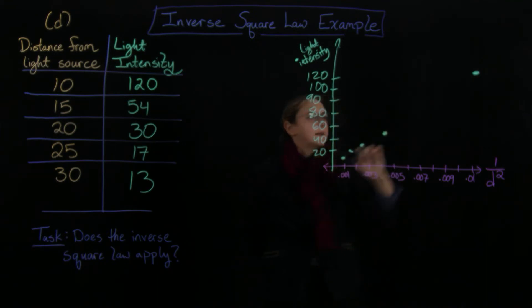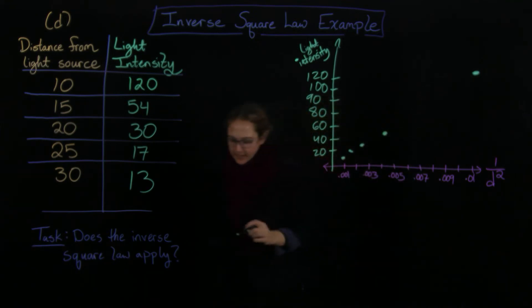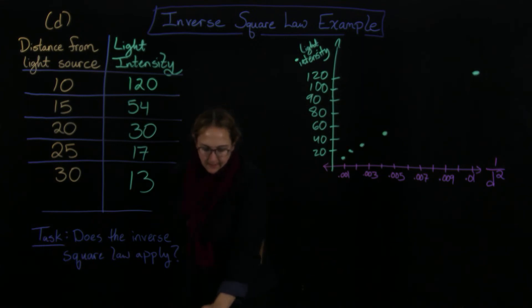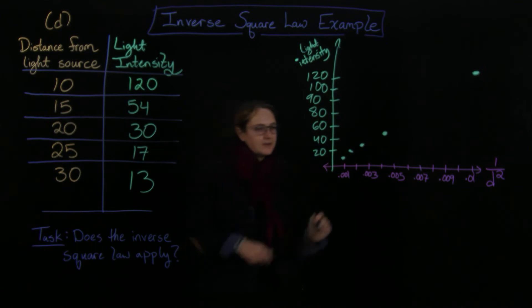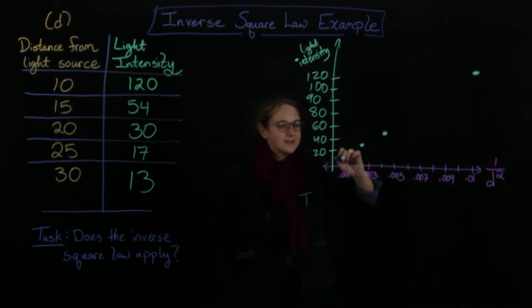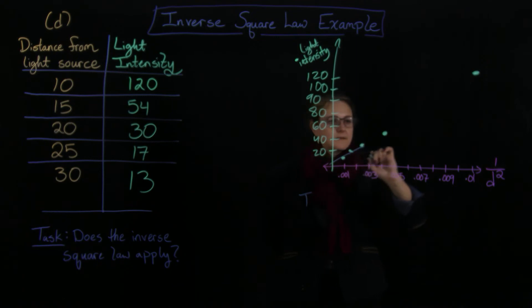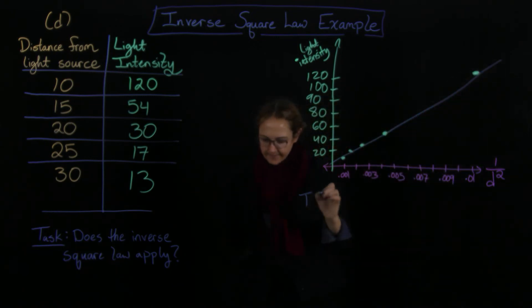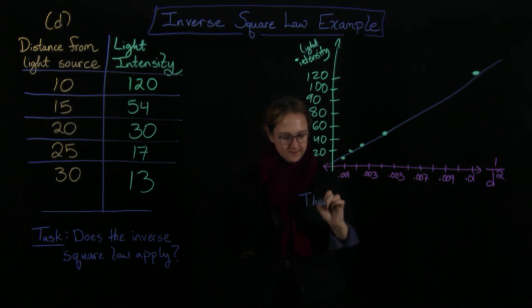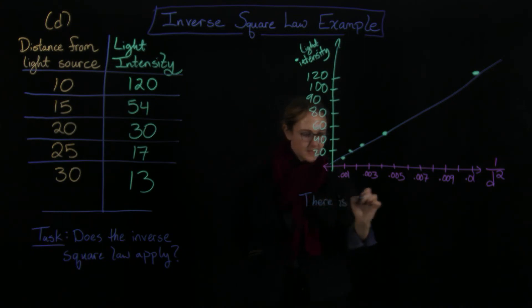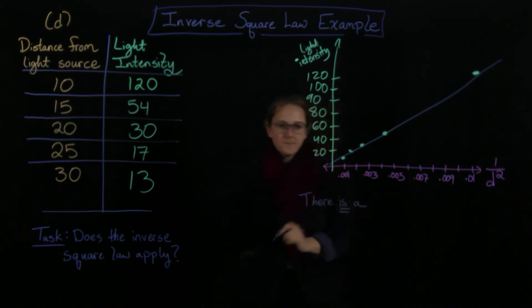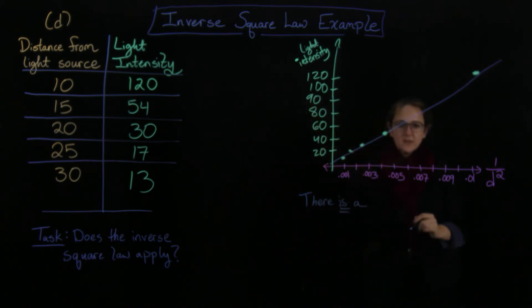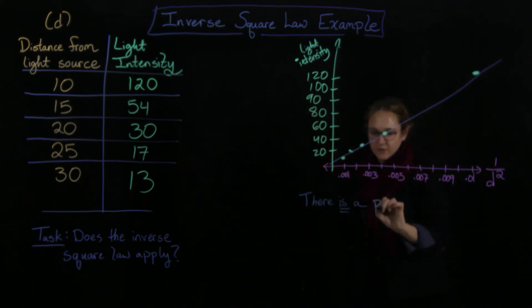And then if you kind of look at these, we're actually happy here because there is a proportional relationship. This does look more or less like a line, you can almost fit this with a line here. So there is a proportional relationship.